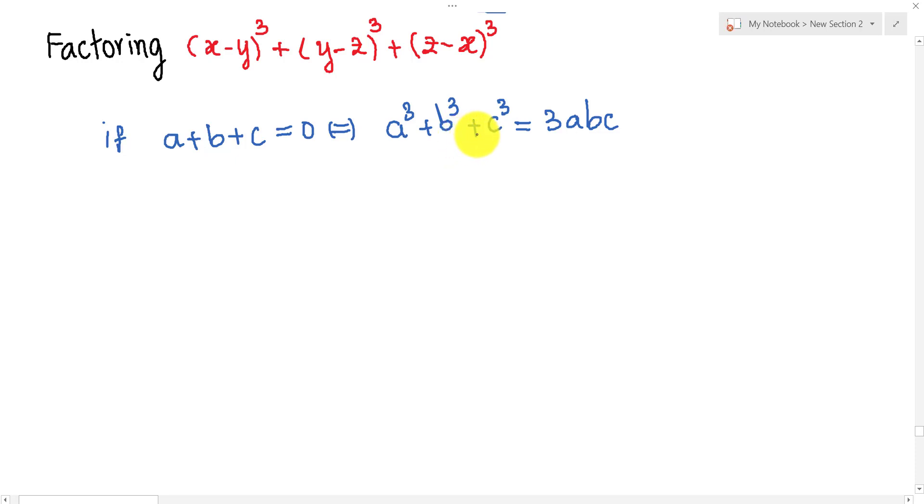Now we let a = x-y, b = y-z, and c = z-x. Then we get a+b+c = (x-y) + (y-z) + (z-x). We see that x cancels x, y cancels y, and z cancels z, which equals 0.